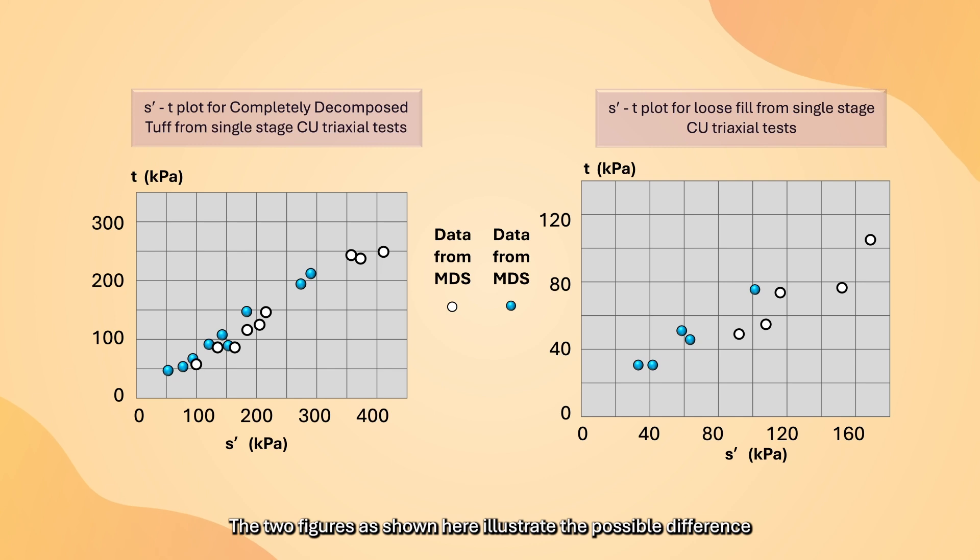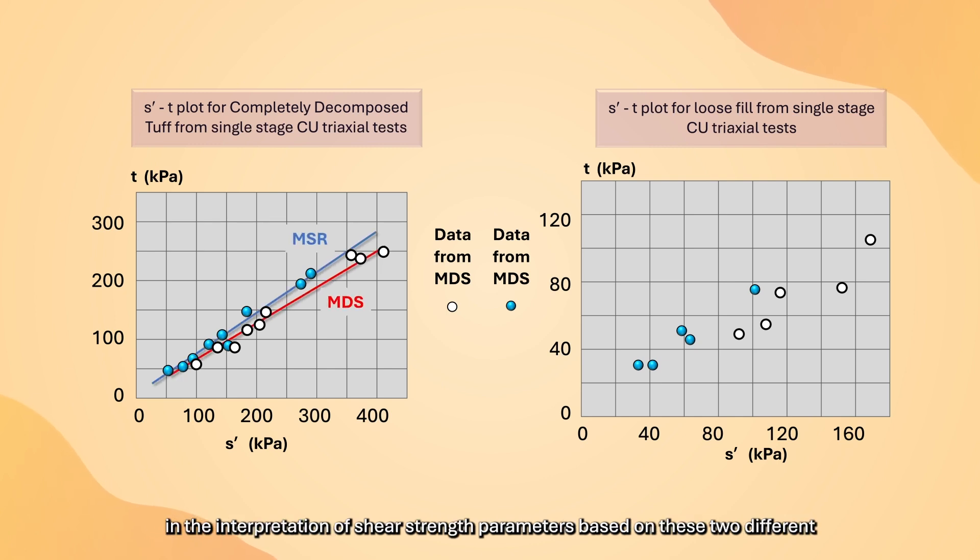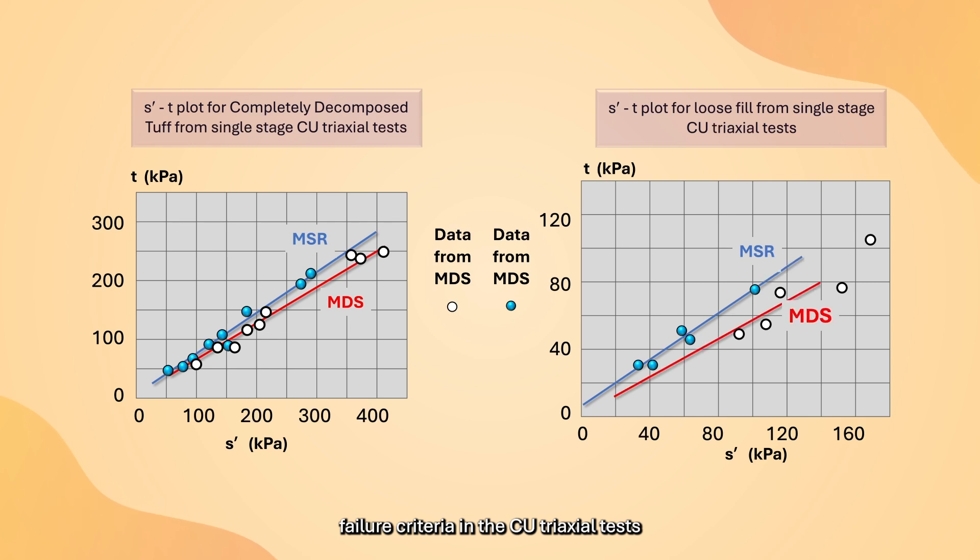The two figures as shown here illustrate the possible difference in the interpretation of shear strength parameters based on these two different failure criteria in the CU triaxial test. Both criteria have been accepted for use in practice.